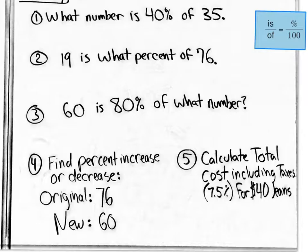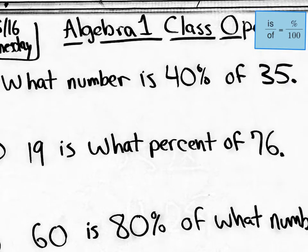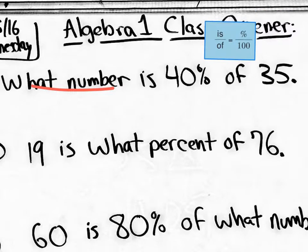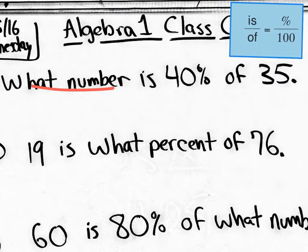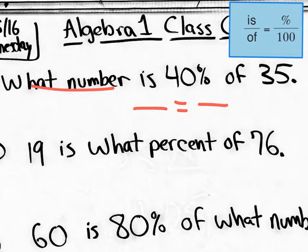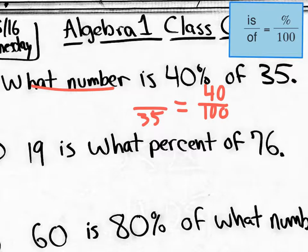Number one says: what number is 40% of 35? We don't know the number, so we don't know the 'is.' We know the percent and we know the 'of.' We set up a proportion — one fraction equaling another fraction. The 40% will always be percent over 100. The 'of' value, 35, goes in the denominator. We don't know the 'is,' so we put an x in the numerator.